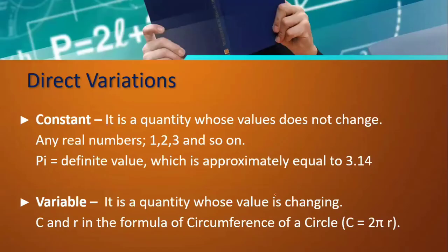Let us proceed to direct variations. In variations, we encounter a constant — the quantity whose value does not change — such as real numbers 1, 2, 3, and so on. We also have pi, which has a fixed value approximately equal to 3.14. No matter what we do, these values do not change — they are called constants.